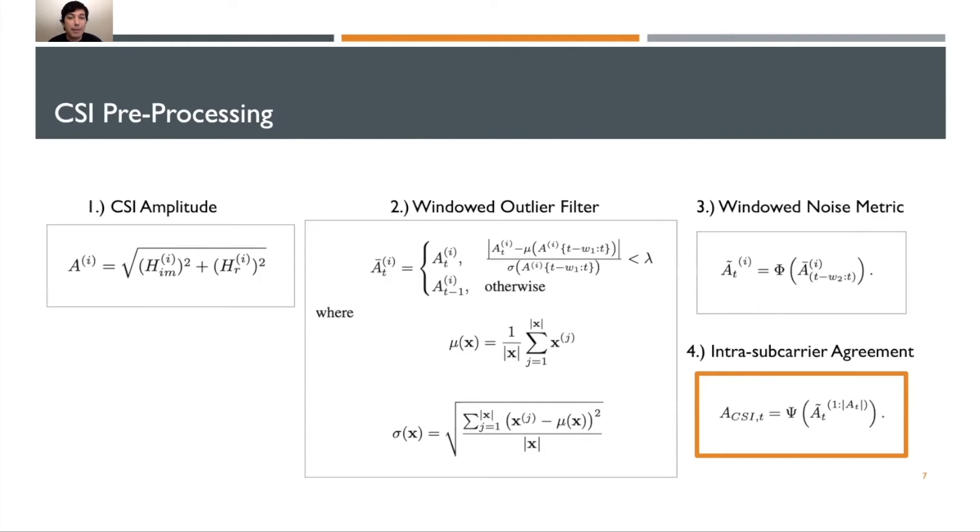The second step is to create a windowed outlier filter. CSI can also be noisy due to some factors like hardware and software. So what we want to do is filter out any obvious invalid samples. For each new sample, we compare it to some number of previously recorded amplitude samples. If the new sample is too dissimilar to the preceding samples, then it's most likely an anomaly, an outlier, in which case we can filter it out.